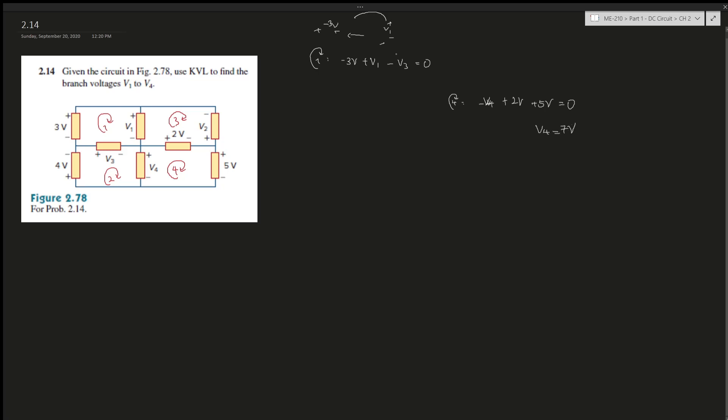Wonderful. With v4 now we can figure out what v3 is. We can use loop 2 here, so it's plus 4v plus v3 plus v4. v4 we got 7 volts.